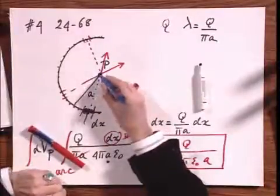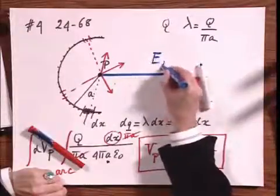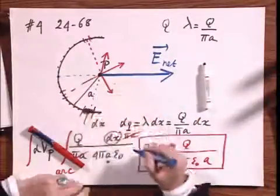And you will have to add up all these e vectors to get the net e vector. And I will help you a little bit, that the net e vector, I claim, must be in the direction, e net, which goes right through the center of this arc.